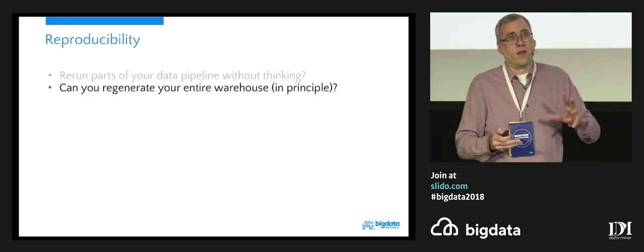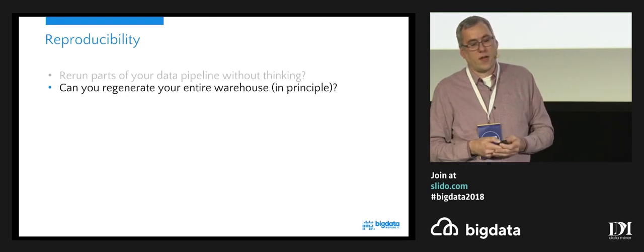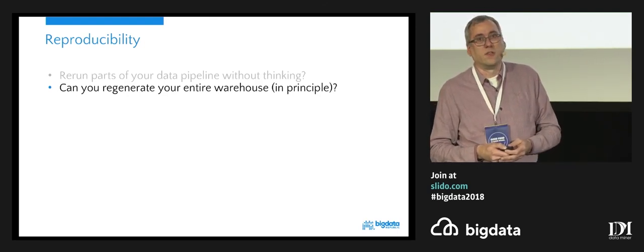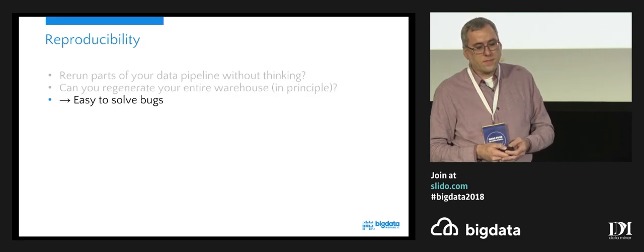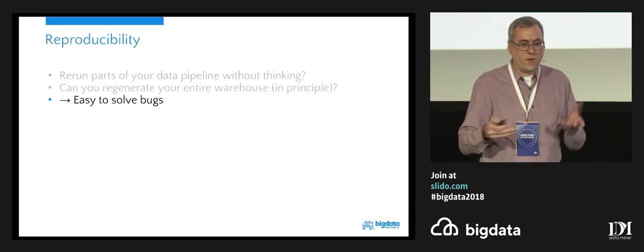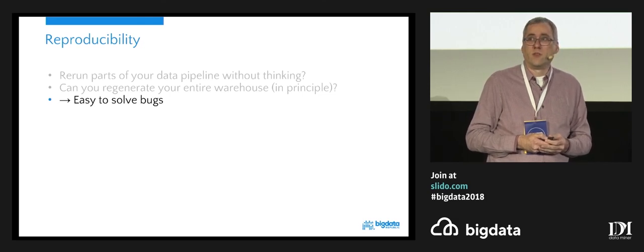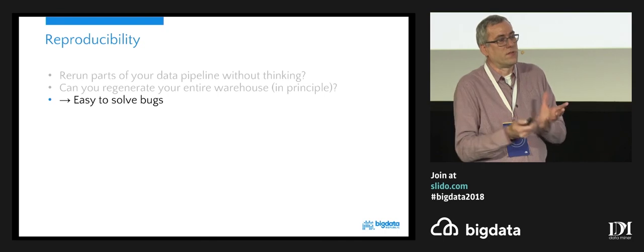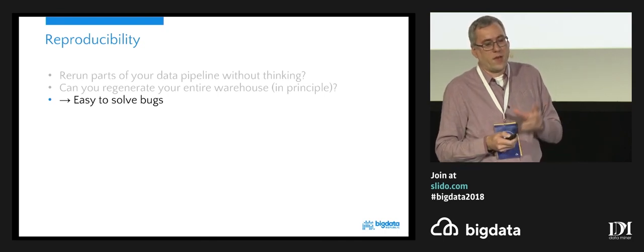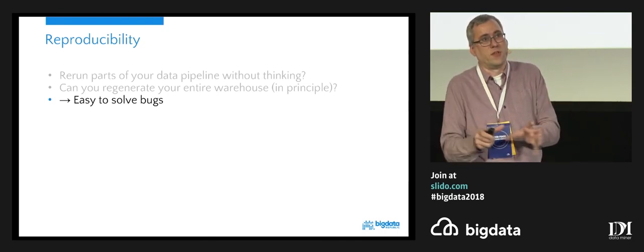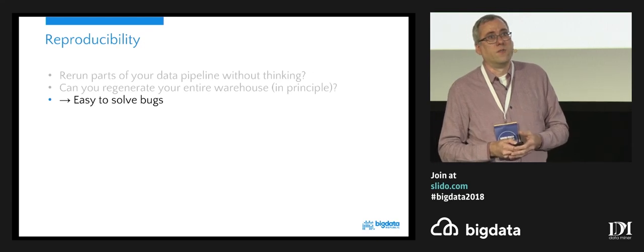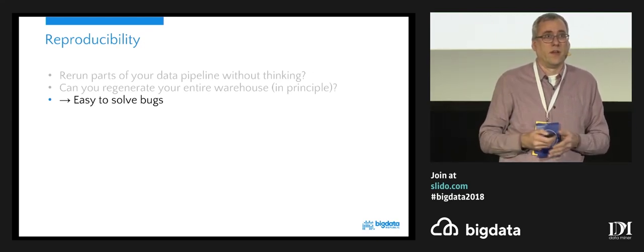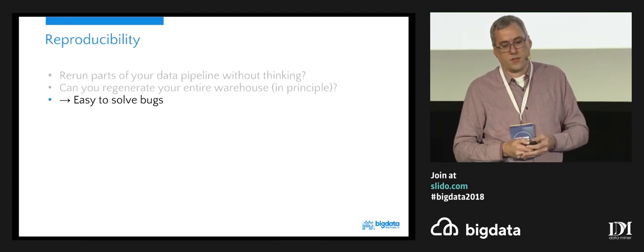Through reproducibility, you're going to have a much easier time solving bugs. If there are issues because the data looks strange or something didn't get processed, if you have immutable partitions you're working with, you're going to be able very easily to detect where these differences were introduced and work on that logic.